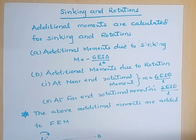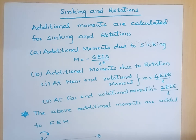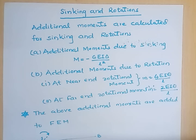The slope deflection equation is: M_AB equals M_AB(FEM) plus 2EI by L, multiplied by the bracket containing 2 theta_A plus theta_B minus 3 delta by L. From this, 2EI by L into 3 delta by L gives minus 6EI delta by L squared. Similarly, for rotation, additional moments are also calculated.